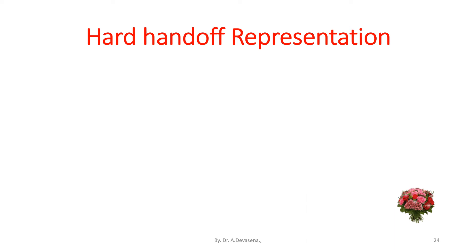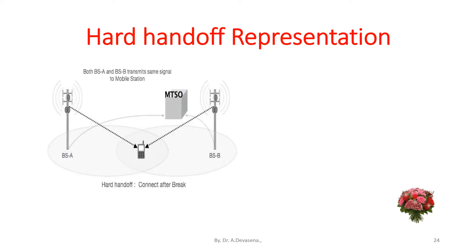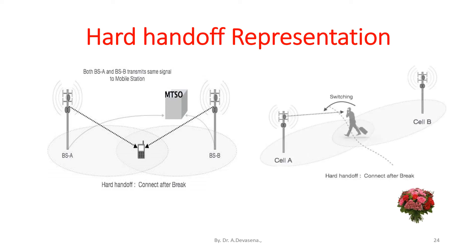In the hard handoff representation, two base stations are shown with a mobile phone in between. The control transitions between the two base stations. If a mobile phone wants to move from one cell region to another, the connection has to break when it enters the next region. In another representation, the person is in cell B and wants to enter cell A — before entering cell A, the previous connection has to be broken. This is indicated in the diagram.